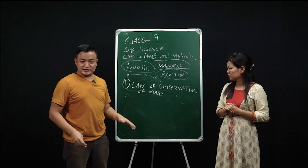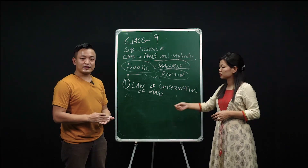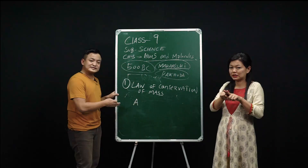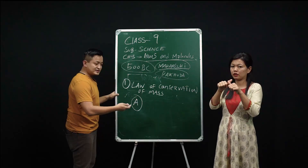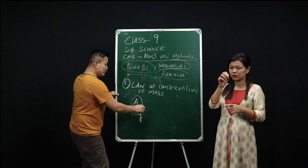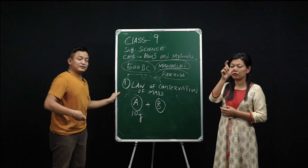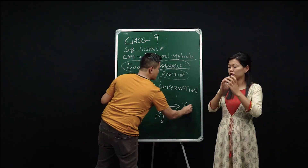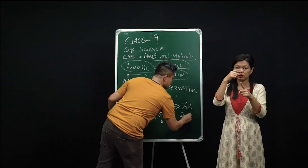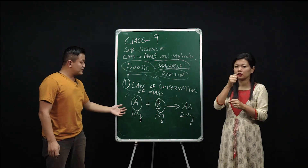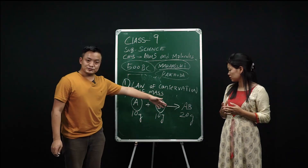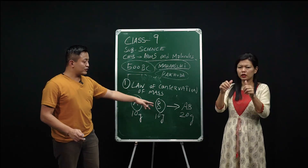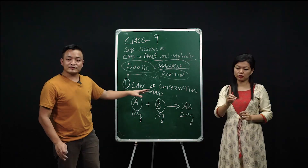The Law of Conservation of Mass means mass can neither be created nor be destroyed. Simply put: suppose person A has a mass of 10 grams and person B has a mass of 10 grams. When they combine, we get A+B with a total of 20 grams. In the reactants we had 20 grams, and in the result we have 20 grams. Mass was not lost, nothing extra was added, and nothing is missing. The mass on the left-hand side equals the mass on the right-hand side.